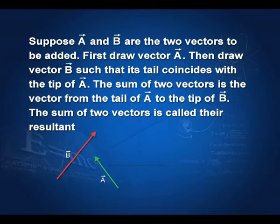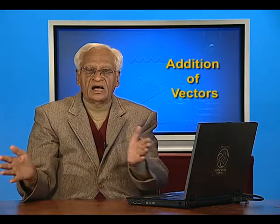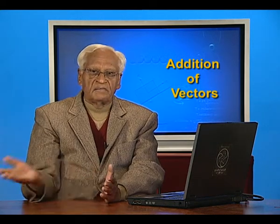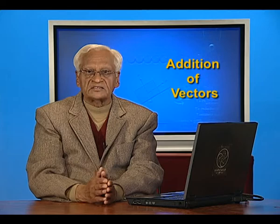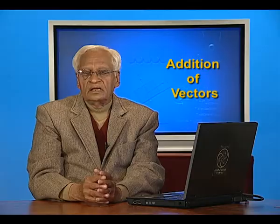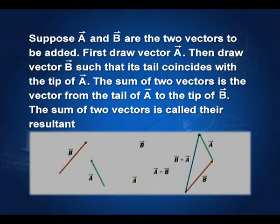Suppose A and B are two vectors to be added. You can see vector B here and vector A here. Do not be surprised that I am asking you to add two vectors which are not joined — they are at different places. You will come across in physics many times that vectors are not at the same point and yet you are required to add them. Recall that the arrow is called the tip or the head of the vector, and the other side is called the tail of the vector.